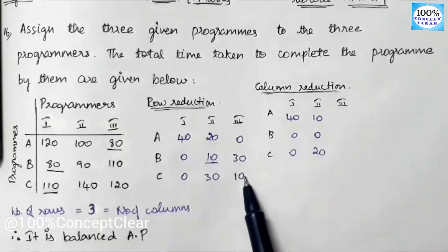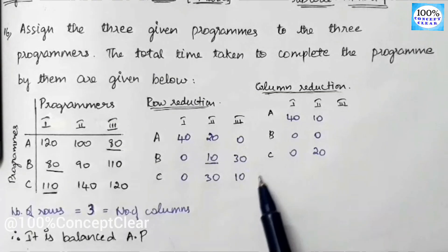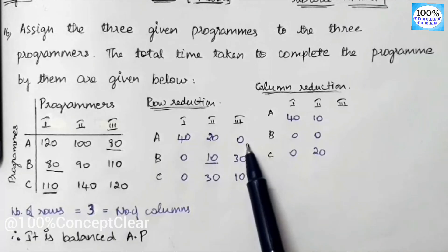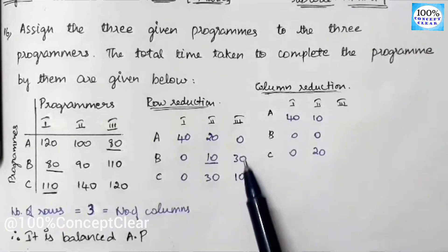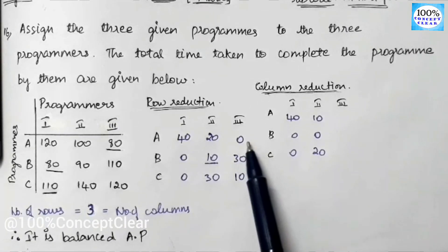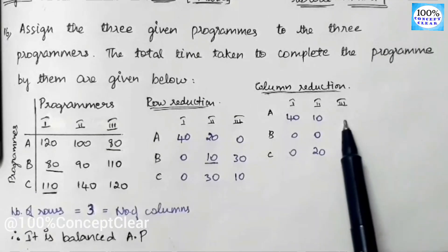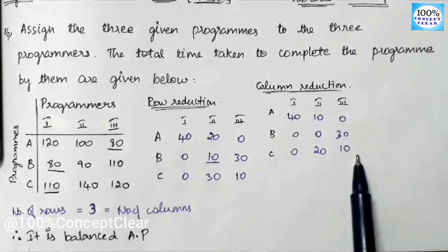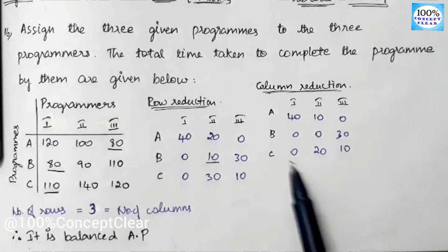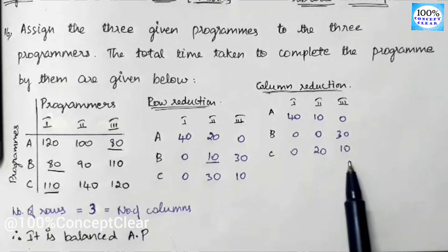Now the third column: the values are 0, 30, and 10. The minimum value is 0, so the third column values remain 0, 30, and 10. Now we complete column reduction.